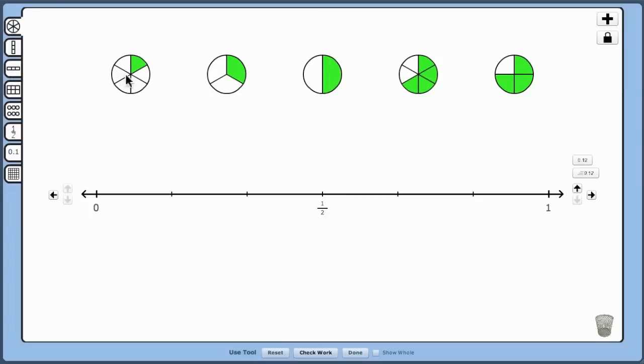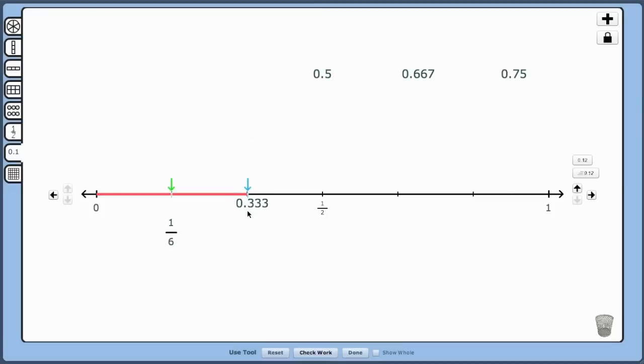Any of these fractions can be dragged and ordered on the number line. Clicking on the decimal tab shows the number as a decimal, which can also be dragged and placed on the number line. Clicking on the grid tab will show the number as a decimal grid.